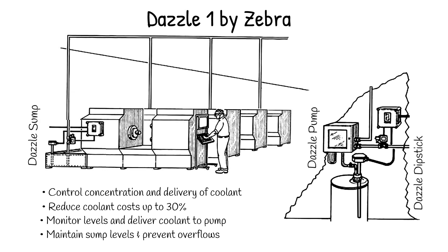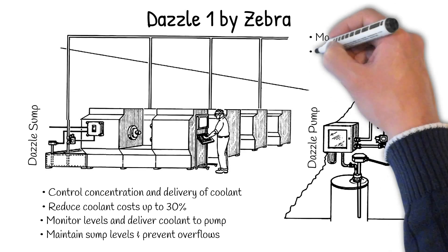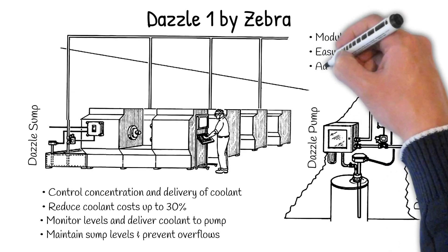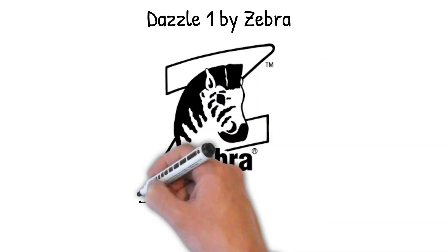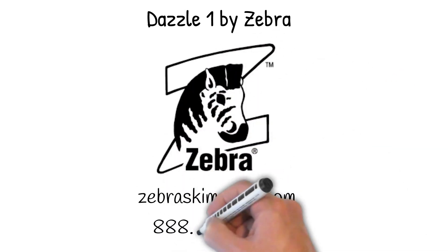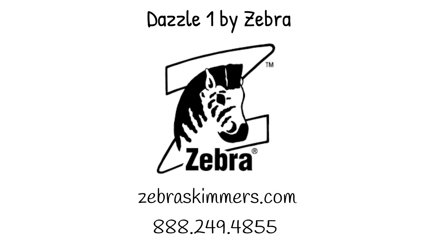The Zebra Dazzle One system is modular, easy to install and adaptable to a wide variety of production environments. To find out more about Dazzle One and how it can save you time and money and improve the quality and reliability of your production, contact Zebra Skimmers today.